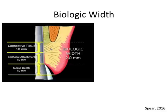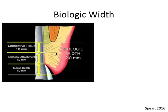First there is a connective tissue attachment to the tooth, and above that is an epithelial attachment to the tooth, which is the weakest of the attachment layers. Both the connective tissue and epithelial attachment layers together constitute the biologic attachment, also known as biologic width.